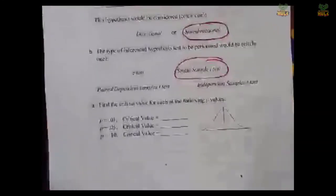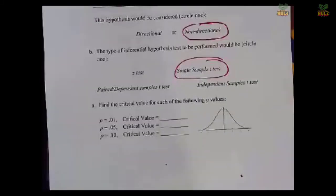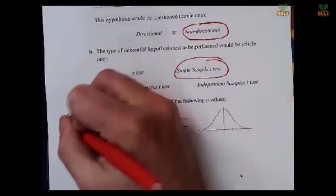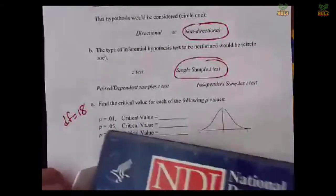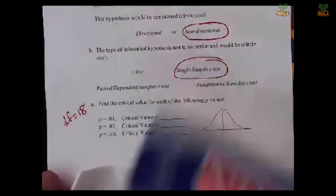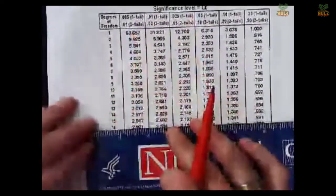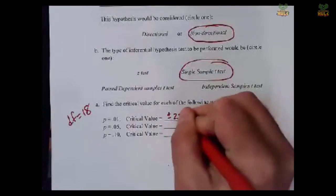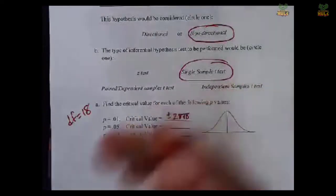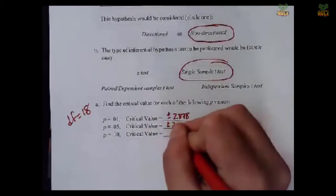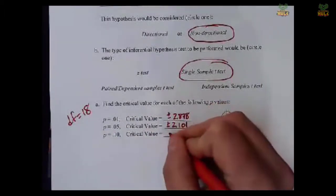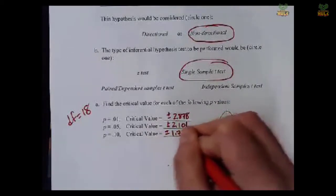So our p-values that we look up later are going to be in both tails. Again, we have just a single sample. We know a population mean. We can presumably get standard deviation and sample mean from the sample data, but we don't know population standard deviation. So single sample t-test. Lastly then, we got to go back to our t-table to get our critical values. So our degrees of freedom in this case, because our sample size was 19, our degrees of freedom is 18. So we have to go into our table again, and the first one says p equals 0.01, but this is going to be 0.01 in two tails, because it's non-directional. So degrees of freedom of 18, 0.01 in two tails here, go all the way down to the degrees of freedom of 18, and it's 2.878.